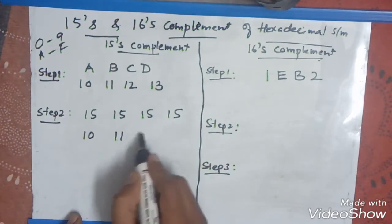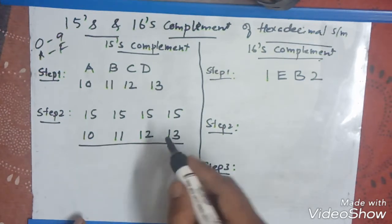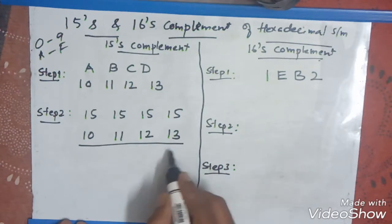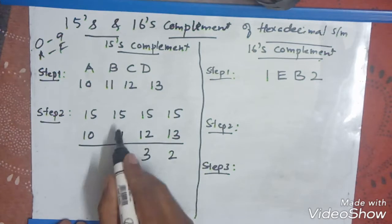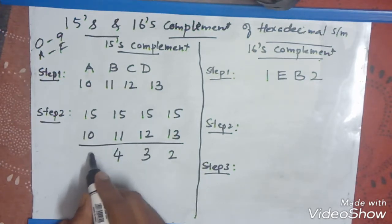10, 11, 12, 13. So, whatever you will get, you can do it. 15 minus 13 is how much? 2. 15 minus 12 is 3. 15 minus 11 is 4. 15 minus 10 is 5.